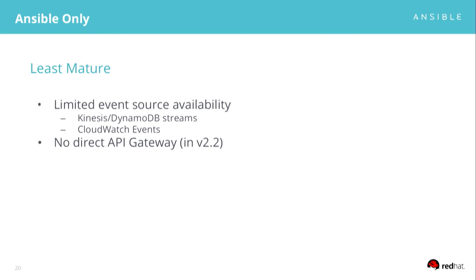The downside is that this is the least mature model for Ansible with serverless, due to the lack of coverage for certain event sources. This is all coming out on Monday with Ansible 2.2. We don't have API Gateway support yet, which is a big showstopper for a lot of serverless deployments, but we have a module in PR for Swagger support that will cover that in 2.3, coming out in a couple more months.